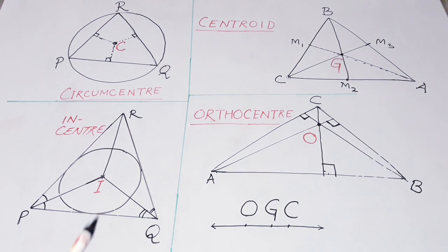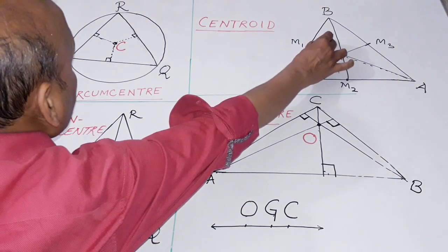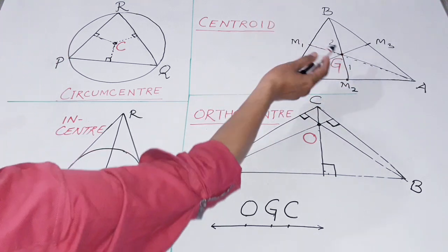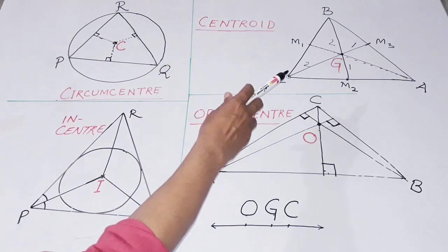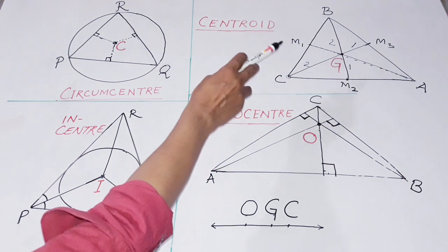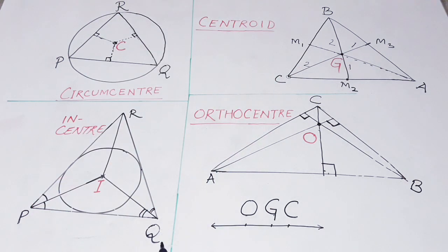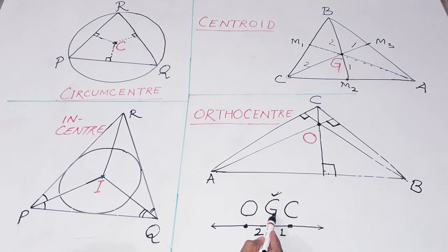You must also know that the centroid of a triangle divides any of the medians in the ratio 2:1 — the longer part is towards the vertex and the shorter part is towards the side. Similarly, the same centroid divides the line joining the orthocenter and the circumcenter also in the ratio 2:1. This is a very beautiful concept — the centroid divides the line joining the orthocenter and the circumcenter in the ratio 2:1, and all three points are collinear.